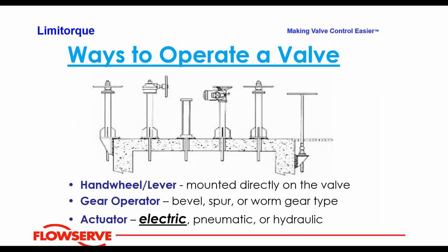Historically there are really three ways to operate a valve: a manual valve with a handwheel or lever; adding a gear operator, which gives mechanical efficiency — typically bevel, spur, or worm gear depending on whether it's multi-turn like a gate valve or quarter-turn like a butterfly valve; and an actuator. Most actuators in municipal plants are electric, though you occasionally see pneumatic and hydraulic. We're going to concentrate on electric actuators since that's the most prevalent type being installed in municipal plants.